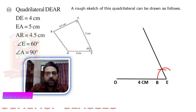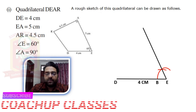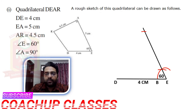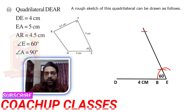Now EA is equal to 5 cm. From point E, we will open the compass to 5 cm and draw an arc like this. We will name this arc point A, because the intersecting point is A — since the distance AE is 5 cm.